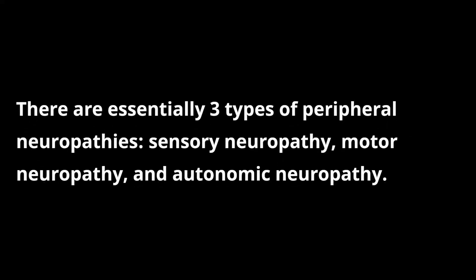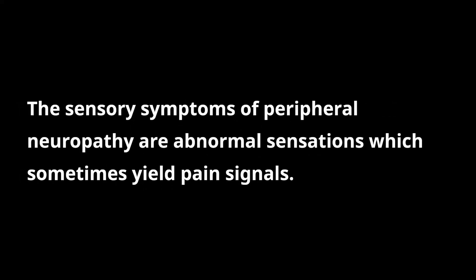There are essentially three types of peripheral neuropathies: sensory neuropathy, motor neuropathy, and autonomic neuropathy. The sensory symptoms of peripheral neuropathy are abnormal sensations which sometimes yield pain signals. The nerves affected can cause chronic pain and severe pain. The pain associated with peripheral neuropathy is typically described as stabbing, burning, or tingling. These are sensory neuropathy symptoms.